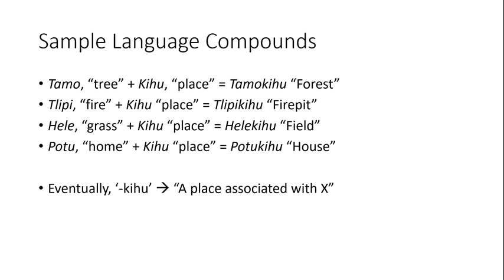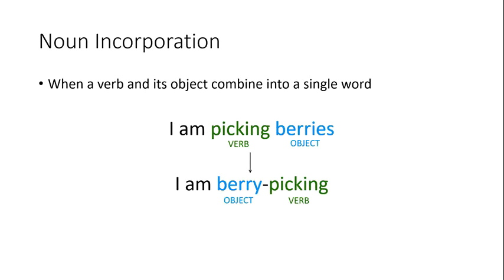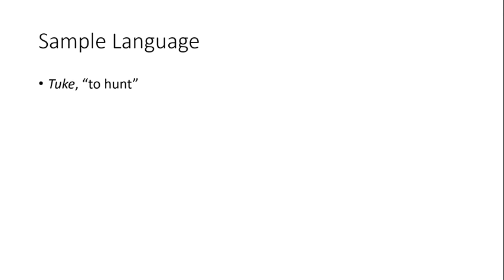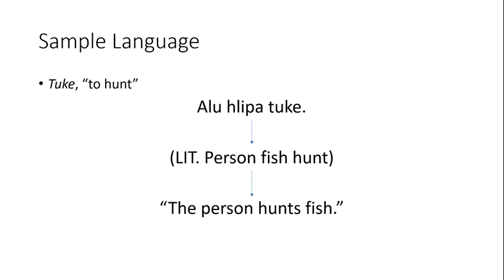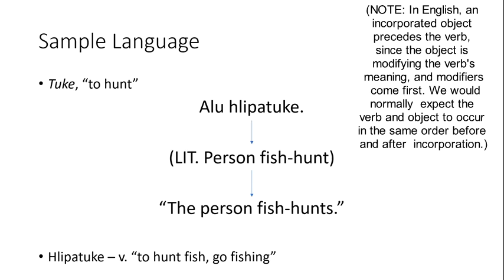We can use a similar trick for verbs, using something called noun incorporation. Noun incorporation occurs when a verb and its object combine into a new word. Let's take our verb, to hunt. Using this, we can create the basic sentence, the person hunts fish. Over time, we could imagine the noun getting sucked into the verb to produce the new meaning, the person fish hunts, where fish hunts has become a new verb that means to hunt fish.